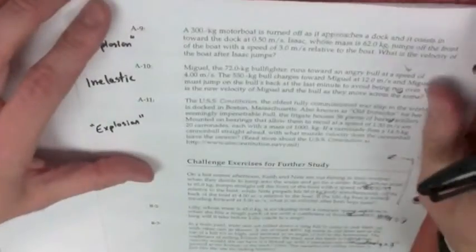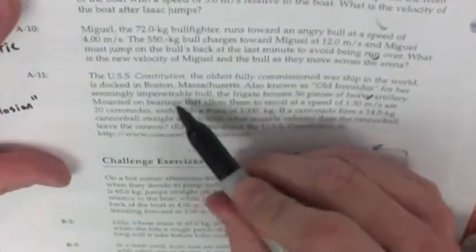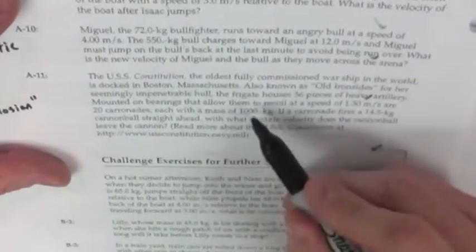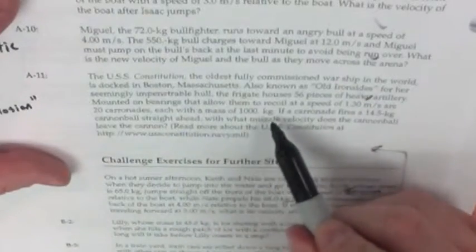Here we have the USS Constitution, the oldest fully commissioned warship in the world, is docked in Boston, Mass. Also known as Old Ironsides for her seemingly impenetrable hull, the frigate houses 56 pieces of heavy artillery mounted on bearings that allow them to recoil.